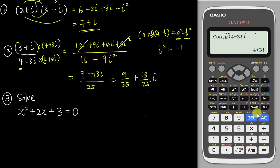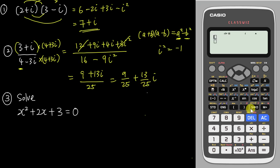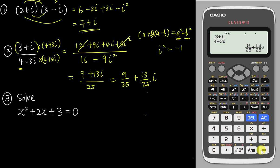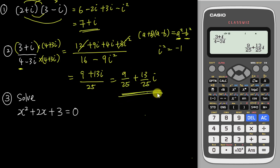So the answer is 9 over 25 plus 13 over 25 i, separating into real and imaginary parts. The good thing about this calculator is you can insert the whole expression and it will tell you the answer directly — the same result. Of course in the exam you still need to show the working to get full marks.